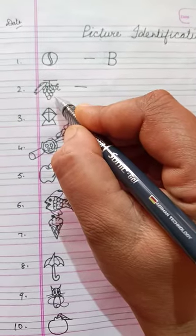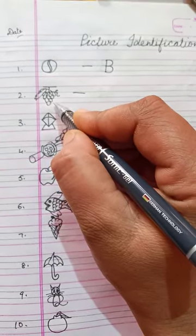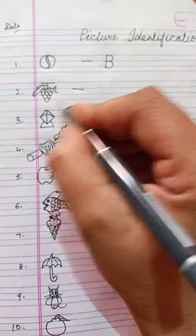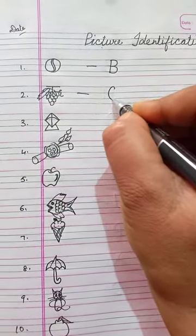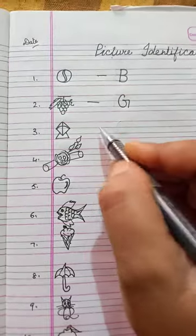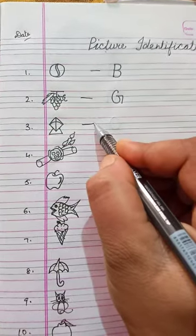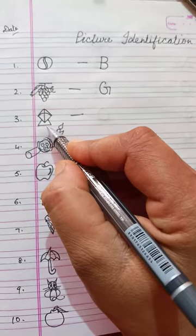Look at this picture. What is this? These are grapes. G for grapes. Look at this picture. What is this?